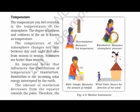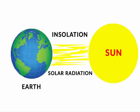Now let's read about temperature. The hotness and coldness of the air around us is known as temperature. The temperature of the atmosphere changes not only between day and night but also from season to season. Summers are hotter than winter. An important factor that influences the distribution of temperature is insolation. Insolation is the incoming solar energy intercepted by the Earth. The amount of insolation decreases from the equator towards the poles, since the sun's rays fall directly on the equator.